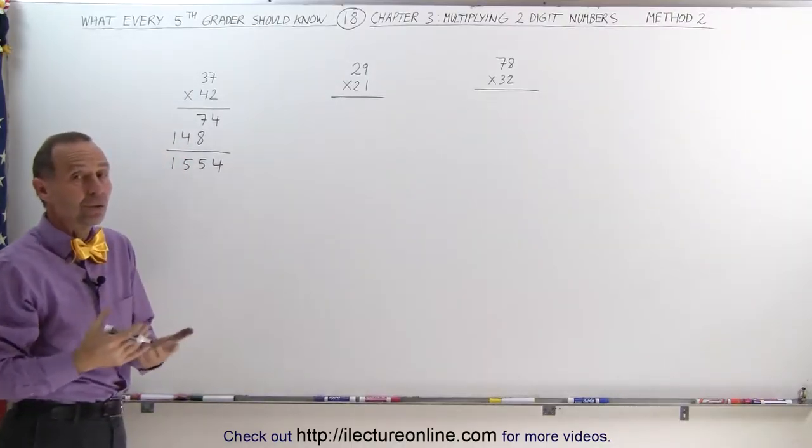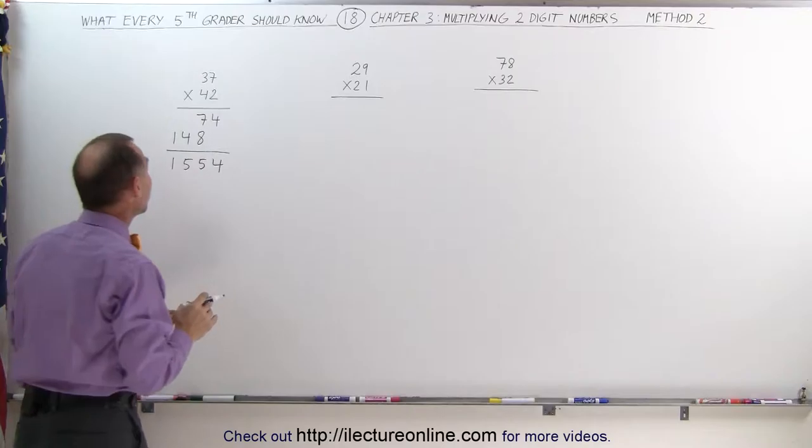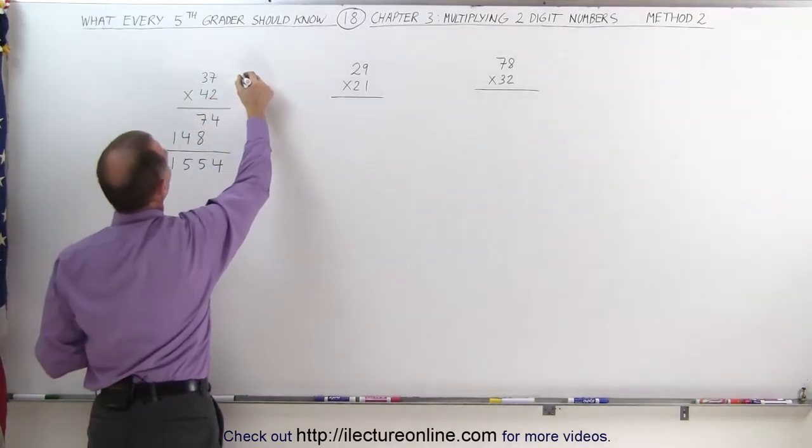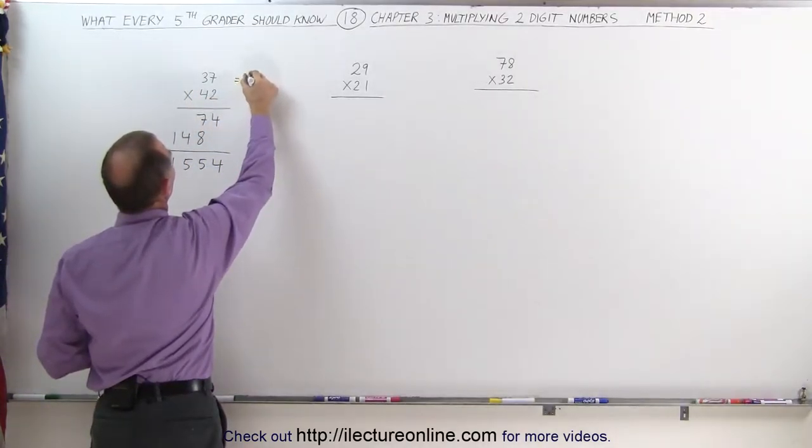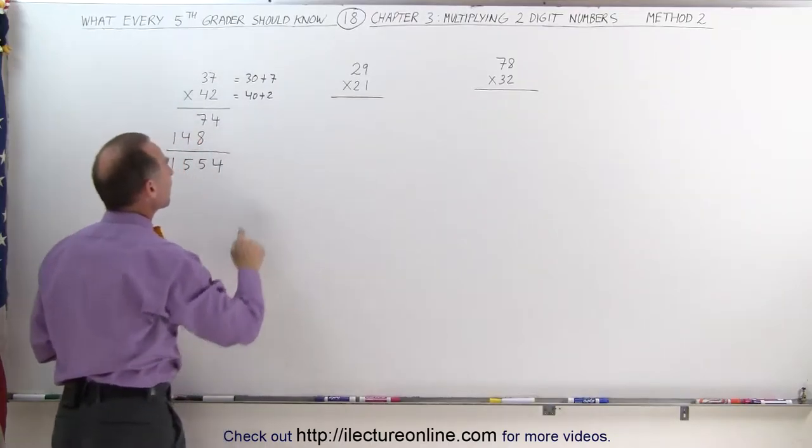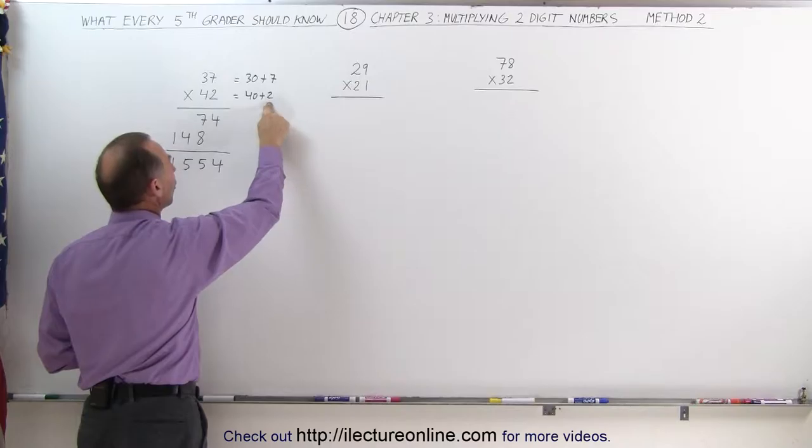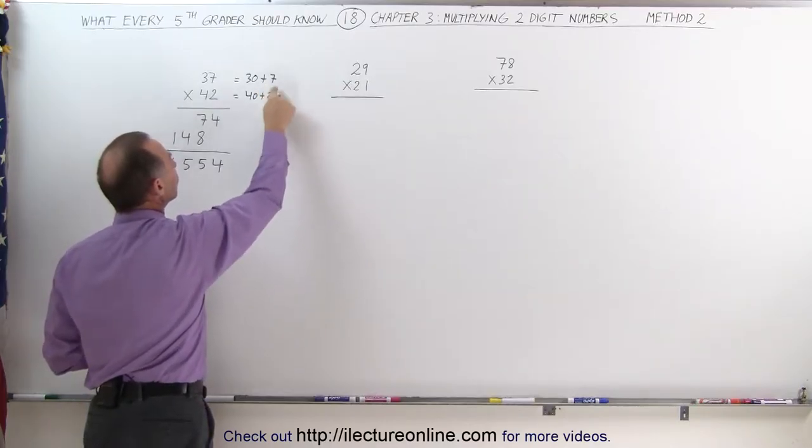Now what is that method 2 I was talking about? What you can think about is that 37 times 42, since 37 is the same as 30 plus 7, and 42 is the same as 40 plus 2, you can get the same thing by multiplying 30 times 40, 30 times 2, 40 times 7, and 2 times 7.